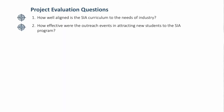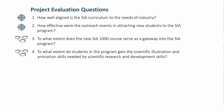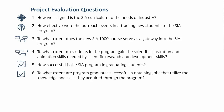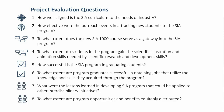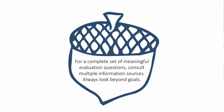We now have a total of eight evaluation questions. The first two came from goals focused on project activities. Two were added by working through the logic model — about short- and midterm outcomes that didn't come up from other sources. Two questions relate to mid- and long-term outcomes based on what NSF wants to know. Finally, the two stakeholder questions are cross-cutting and specific to their information needs. These last two wouldn't take a lot of extra resources because they emerge as the evaluation unfolds. For a complete set of meaningful evaluation questions, consult multiple information sources and always look beyond goals.